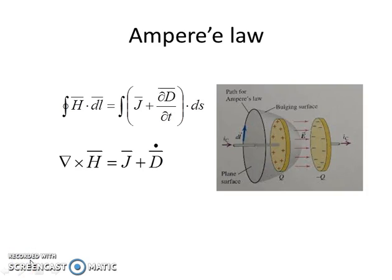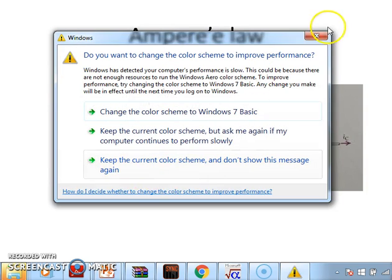Next we have Ampere's law, which tells us that a flowing electric current gives rise to a magnetic field that circles the wire. In addition, it also says that an electric field that is changing in time gives rise to a magnetic field that encircles the electric field — this is the displacement current term that Maxwell himself introduced. So there are two ways to generate a circulating magnetic field: a flowing electric current or a changing electric field, and both give rise to the same phenomenon.